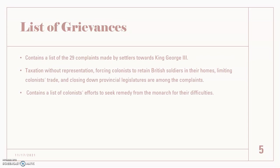The list of grievances basically contains about 29 complaints made by the colonists towards King George III. Some of those include taxation without representation, which is a very common and important phrase in American history, forcing colonists to house British soldiers in their homes, and limiting their trade and closing down legislatures. Those are some of the common complaints noted in the Declaration of Independence.